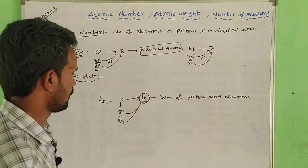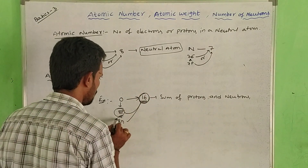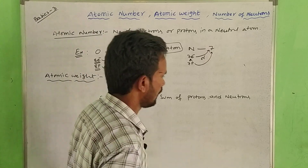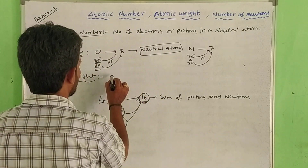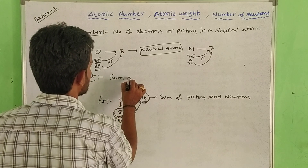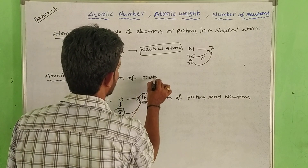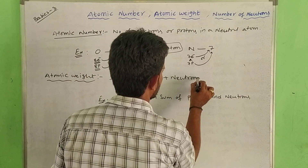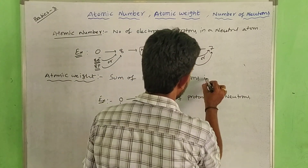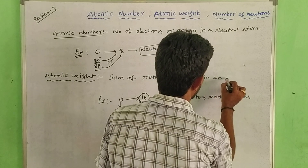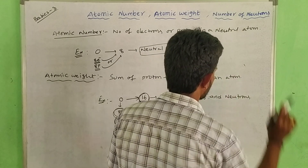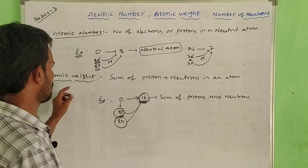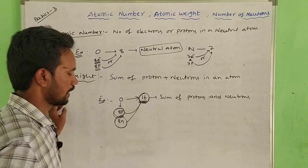Nucleons — protons and neutrons. The sum of protons and neutrons in an atom gives the atomic weight. Protons plus neutrons equals the atomic weight.